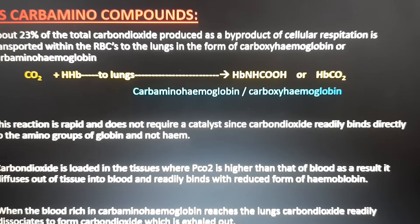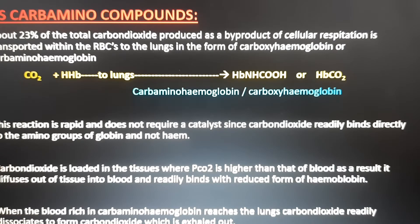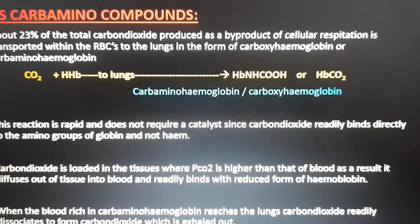This reaction is rapid and does not require a catalyst, since carbon dioxide readily binds directly to the amino group of globin. Carbon dioxide is loaded in the tissues where the partial pressure of carbon dioxide is higher than that of the blood, so it diffuses from the tissue into the blood and readily binds with the reduced form of hemoglobin. When the blood rich in carboxyhemoglobin reaches the lungs, carbon dioxide readily dissociates and is exhaled out.